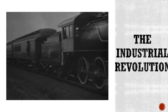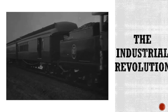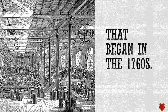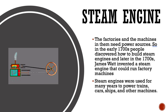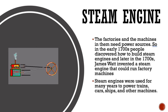It's time for a history sentence breakdown on the Industrial Revolution. We will talk about each of these inventions and then we'll talk about the Industrial Revolution itself. Let's start with the steam engine. Factories had machines in them and they needed power sources. In the early 1700s, people discovered how to build steam engines. Then later in the 1700s, James Watt invented a steam engine that could run factory machines.